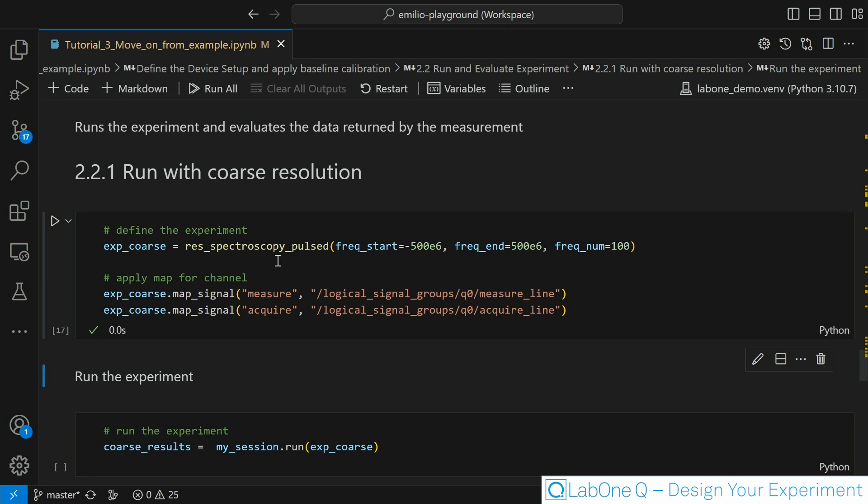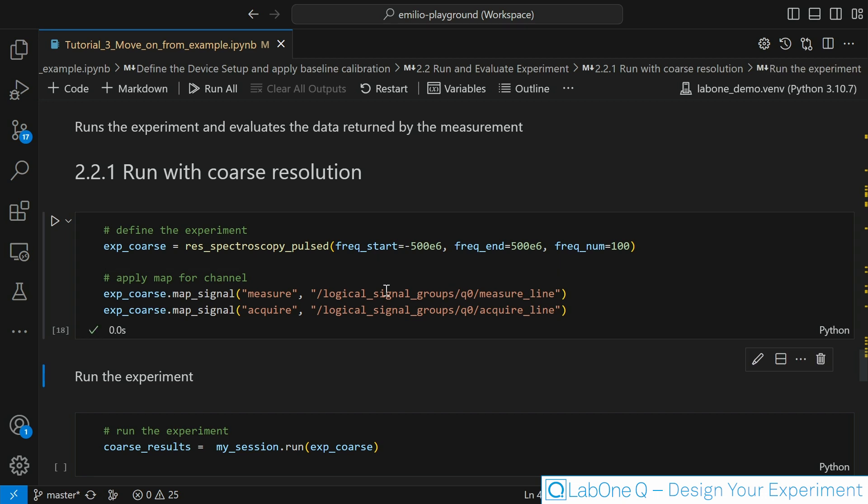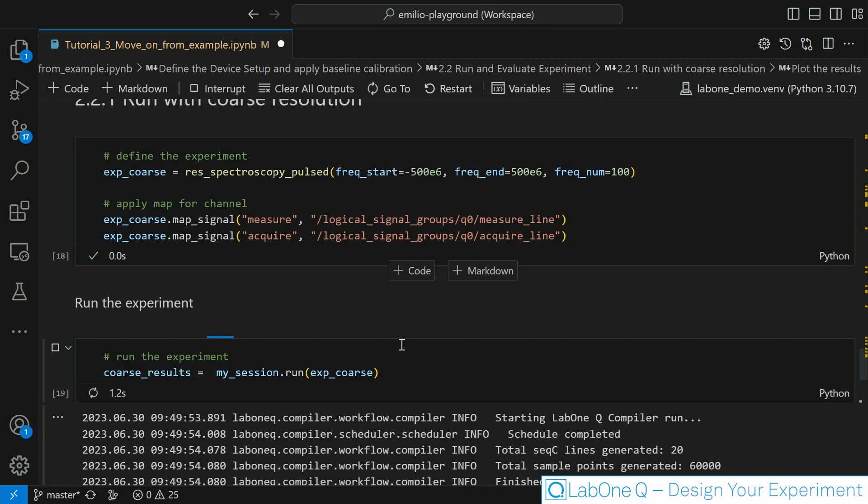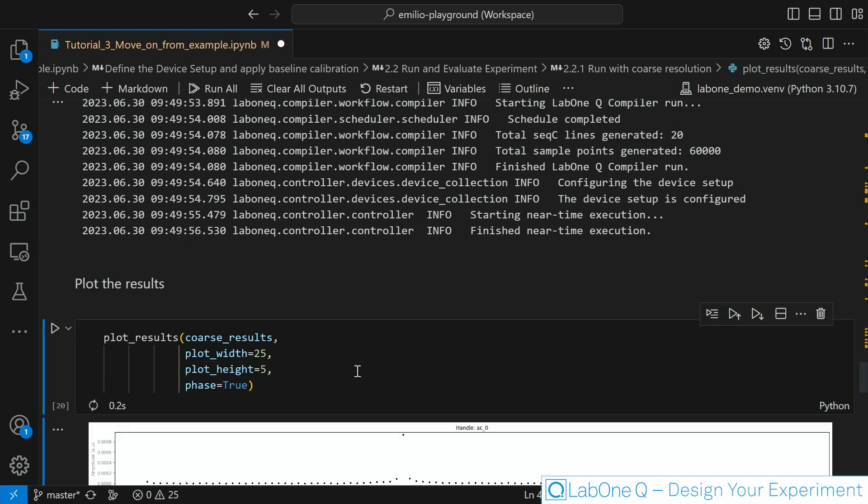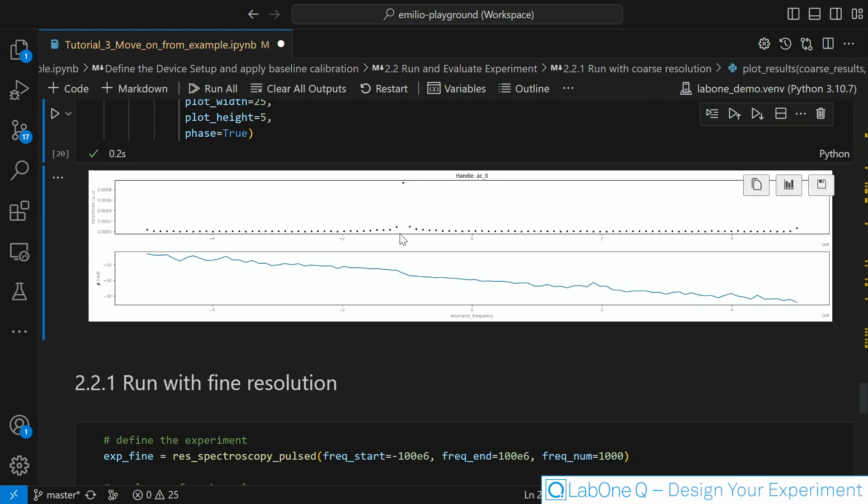As we learned in the previous tutorial I am mapping the measure and acquire line to the logical signal line that I define in my configuration file. Let's run it one time and see what we find. As you can see we did find a resonance. It's a bit on the left of our center frequency so it should be a bit below 7 gigahertz.